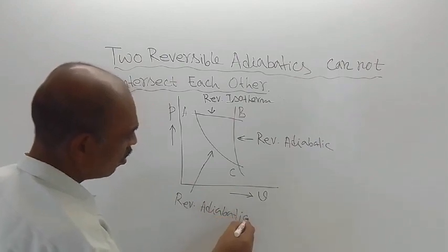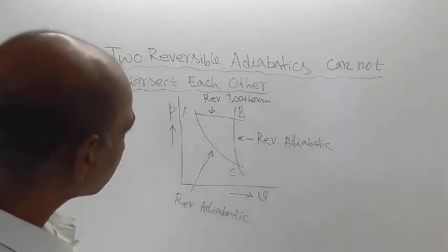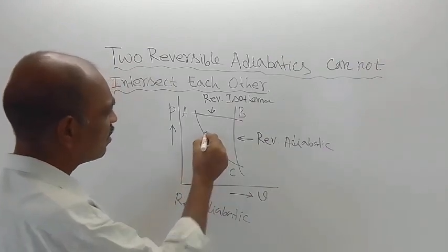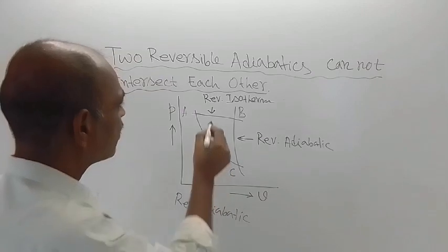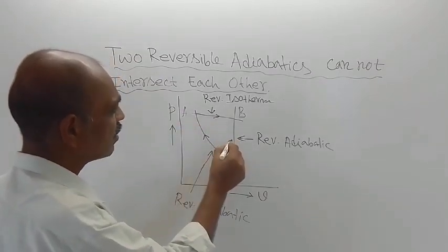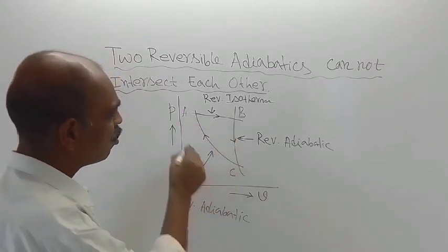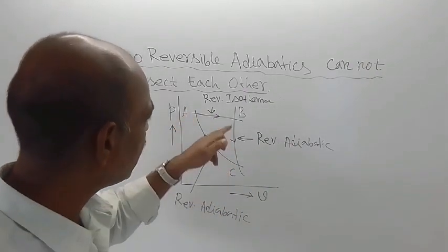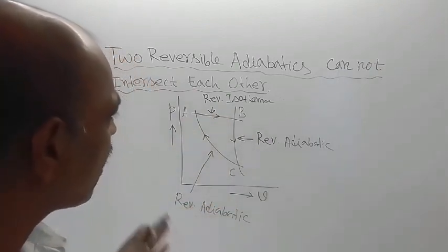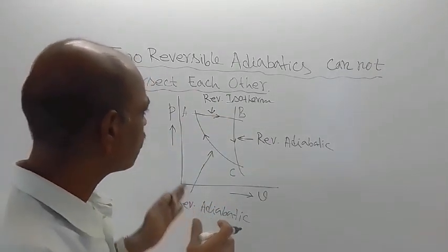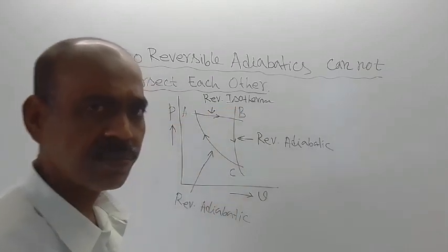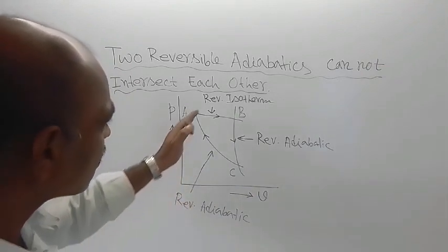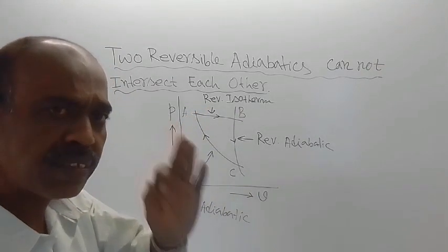Now, you can see that the process direction is: from C to A, then A to B, then B to C. There are a total of three processes — CA, AB, and BC — and all these three processes make a closed cycle. This is a cyclic process; it makes one complete cycle.